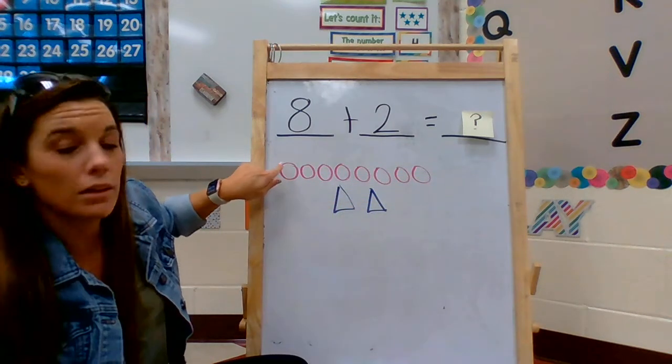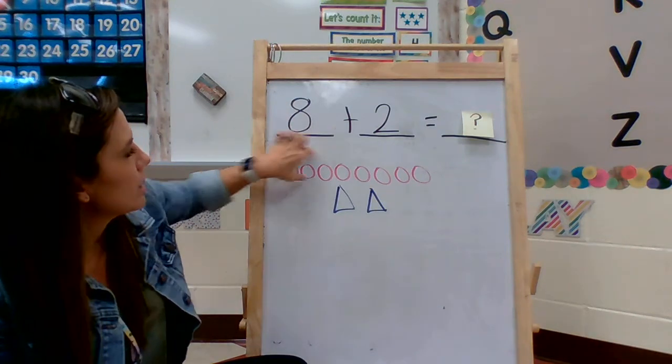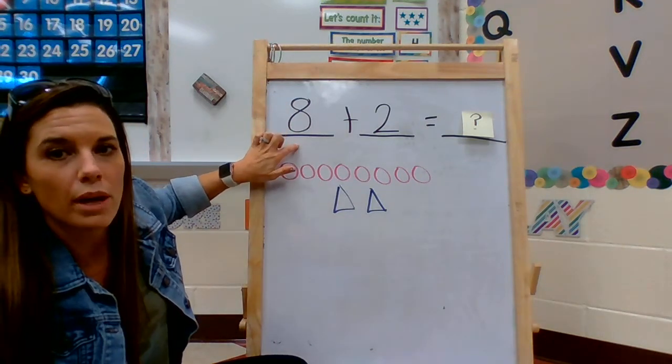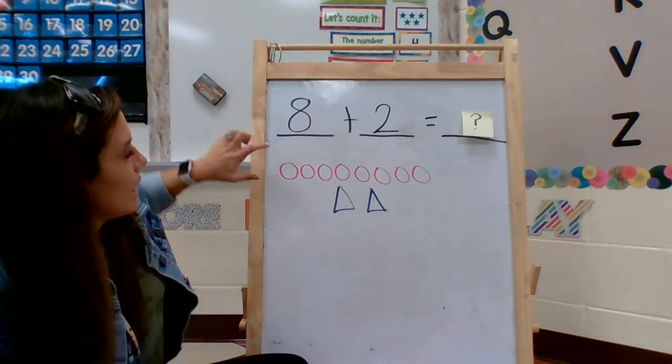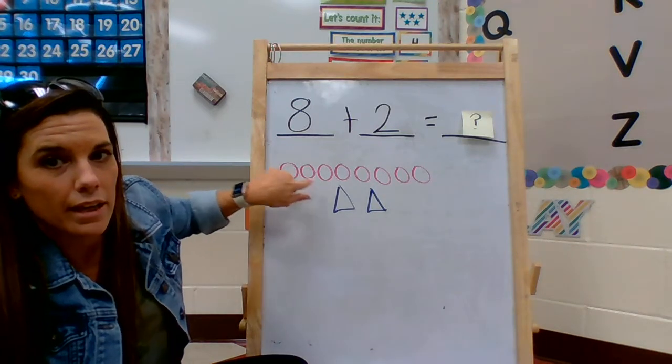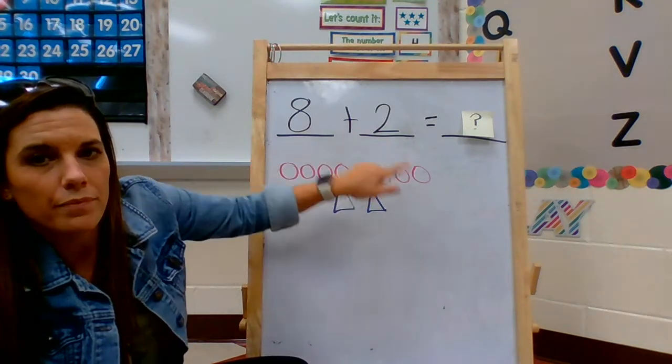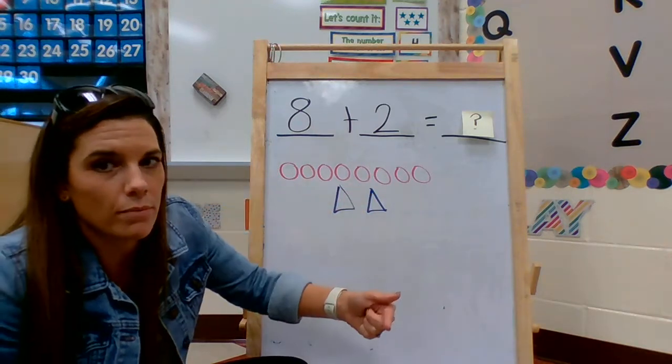Let's count. Well, actually, we don't even need to count all of them, because remember, pink circles represent the number 8, so I can just start with 8. I'm going to put the bigger number in my head. 8, 9, 10. Do you see how I did that? I counted the bigger number as a whole, as a group, and then I counted on from there.